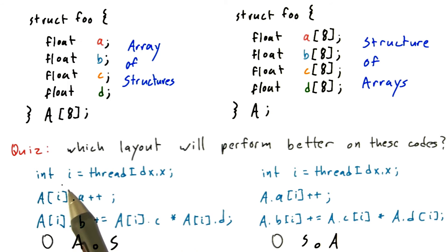So I've set I equal to the thread index, and then we access field A for a given thread, and then we access field B, C, and D.